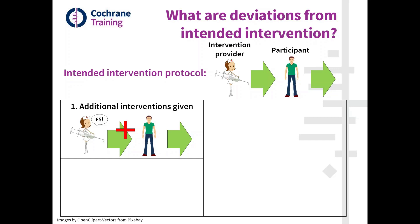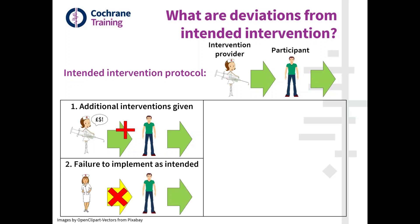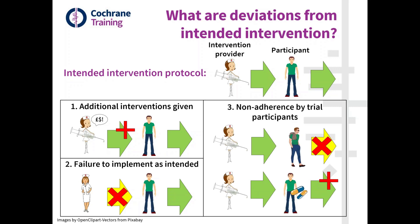How might we deviate from that? The first example is where we have the intervention provider giving additional interventions. For example, the provider vaccinates the individual but also advises some of them to attend as many illegal raves as possible to maximize exposure to the virus — an intervention that might affect the vaccine's effect. The second area of deviations is where the intervention does not get delivered as intended; maybe the vaccine just doesn't get given. The third area is around non-adherence by trial participants — they may refuse the vaccine or take additional interventions of their own accord.